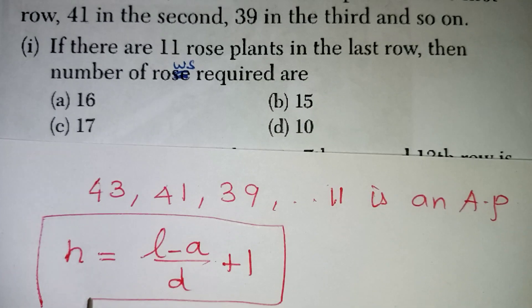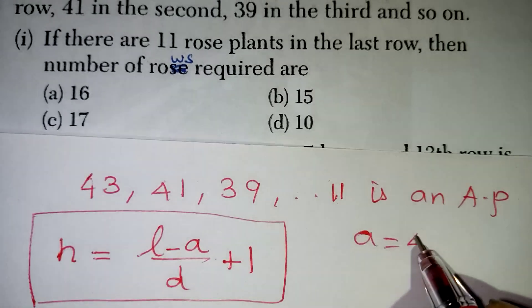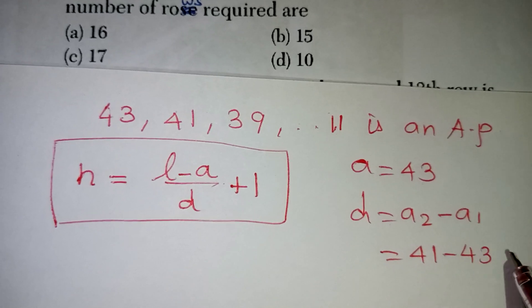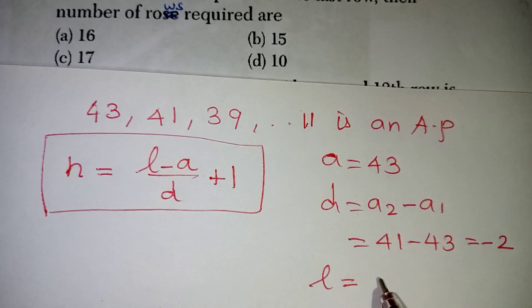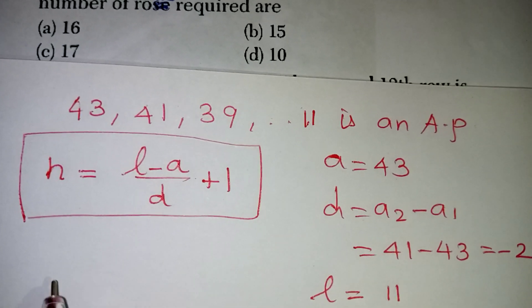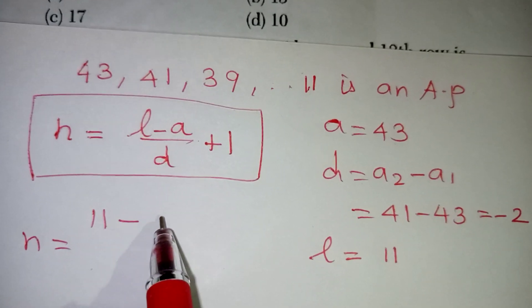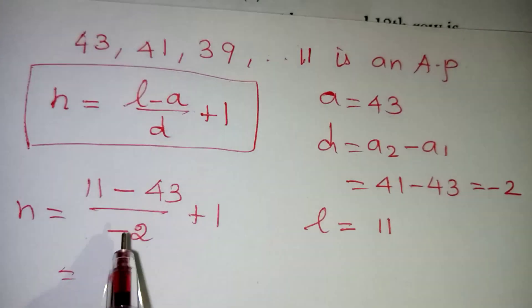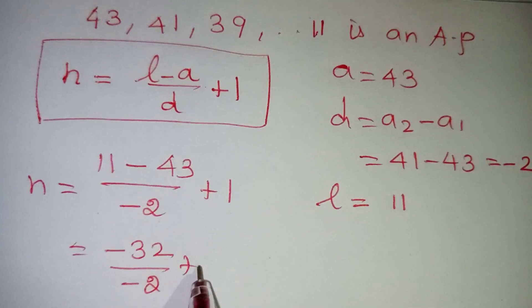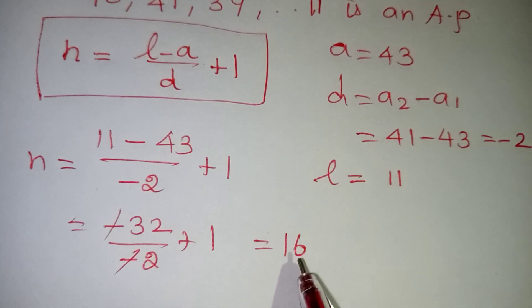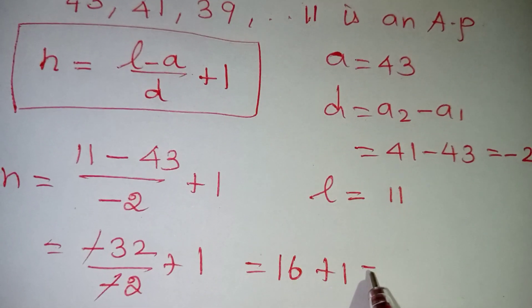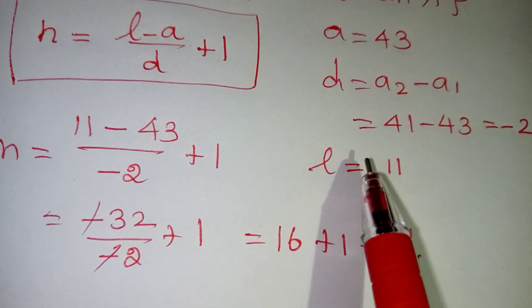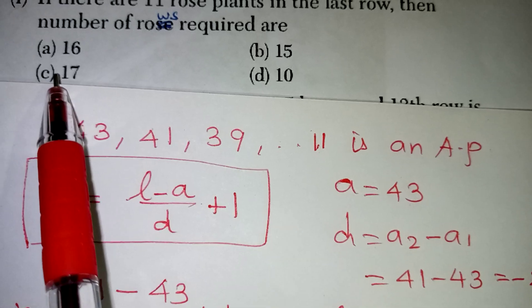From the question, our first term A is 43. The difference is, from the second term we subtract the first term, so 41 minus 43 will give you minus 2. And the last term, our nth term is 11. Now let's apply all the values. n is equal to L value 11 minus A value 43, divided by the difference minus 2, plus 1. Now 11 minus 43 is minus 32 by minus 2 plus 1. Minus minus got cancelled. 32 by 2 will give you 16 and plus 1, so 17. So the 17th term will consist of the 11 rose plants, or we can say there are 17 rows totally. So C option 17 is your correct answer.